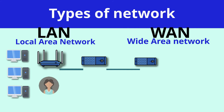A LAN usually has a single owner. For instance, your house, your company, or your school will have a single LAN. But a WAN usually consists of lots of networks connected together, so it'll have multiple owners. No one person owns a WAN.